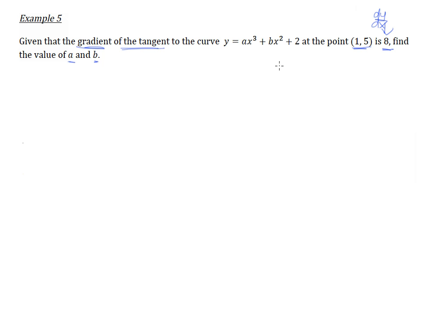So, first of all, it is quite easy for us to understand that, given this coordinate, x equals to 1 and y equals to 5. It's on the curve, and therefore, when we substitute in x equals to 1, and y equals to 5 into the curve, we will end up with one equation.